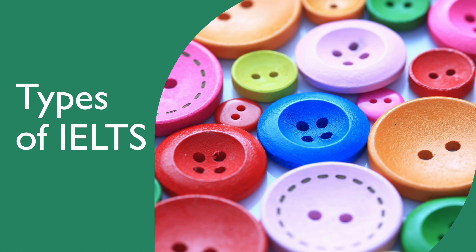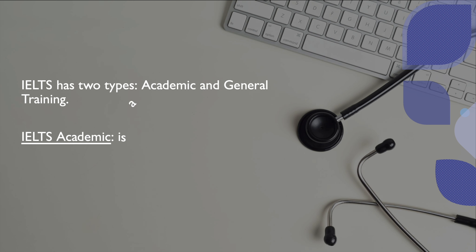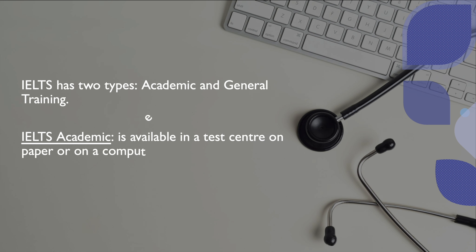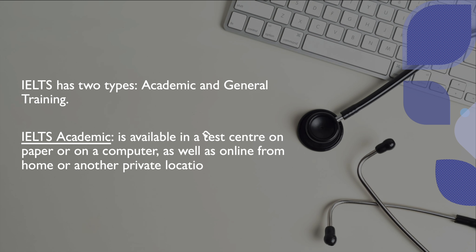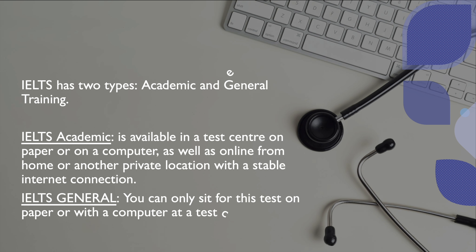There are two types of IELTS tests: academic and general training. IELTS Academic is available at a test center on paper or on a computer, as well as online from home or another private location with a stable internet connection. IELTS General can only be taken on paper or with a computer at a test center.